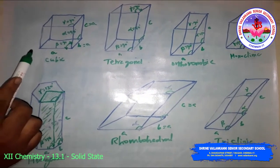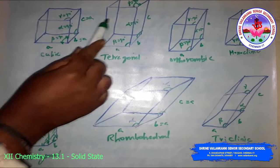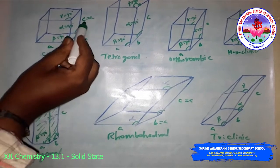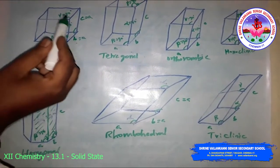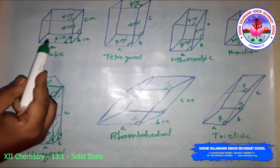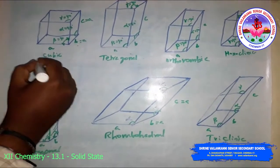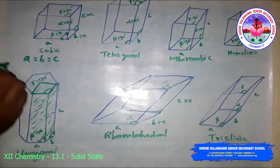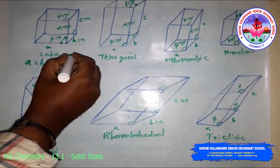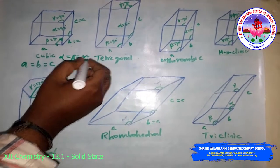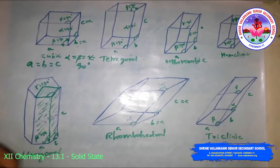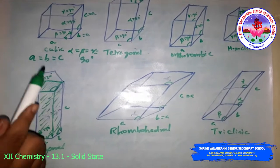The cubic crystal system has three possible variations: primitive, body-centered, and face-centered. The edge lengths are all equal: A = B = C. The axial angles are all equal: alpha = beta = gamma = 90°. Examples include NaCl (sodium chloride), copper, and zinc blende.